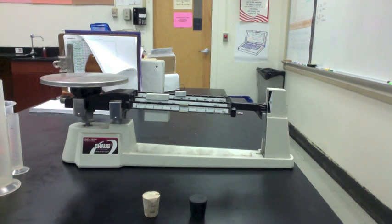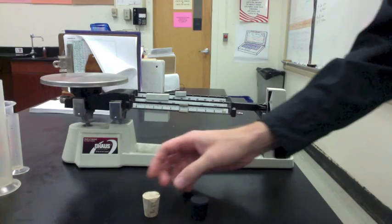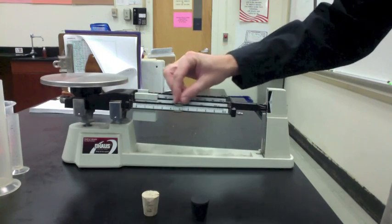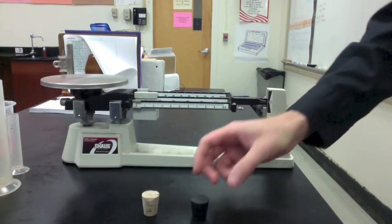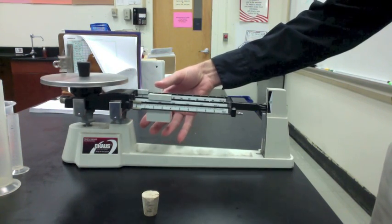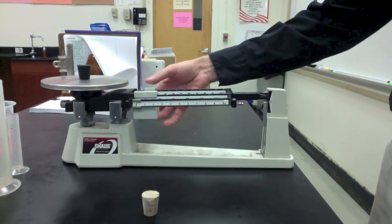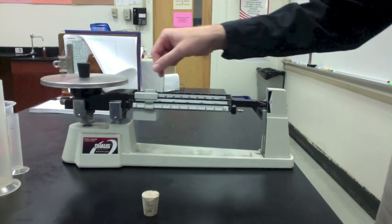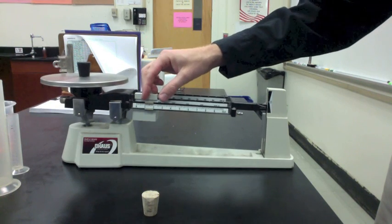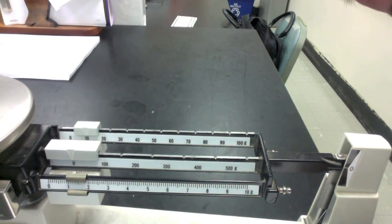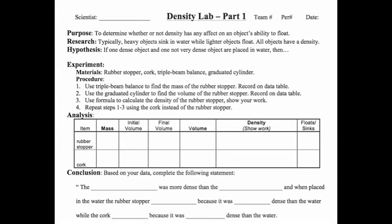Let's use the triple beam balance to find the mass of the rubber stopper and the cork. First step is to zero out the scale. Place the rubber stopper on the pan and find the mass, moving the biggest rider first, then the medium rider, and finally the smallest rider. With the scale balanced, add up all the readings on the riders. Put that mass on your data table under the column for mass.